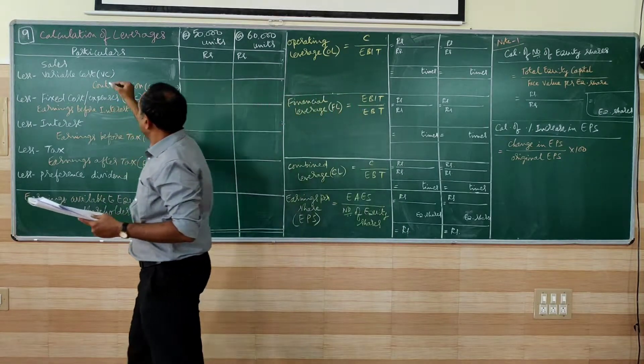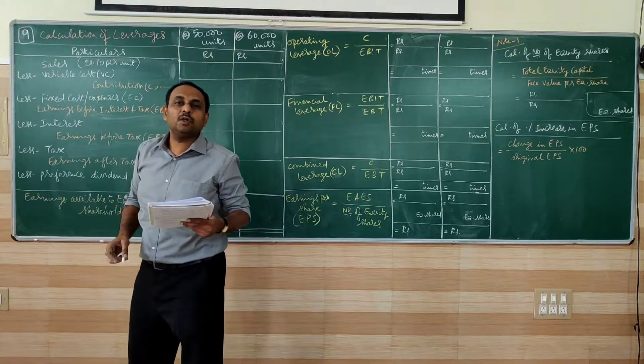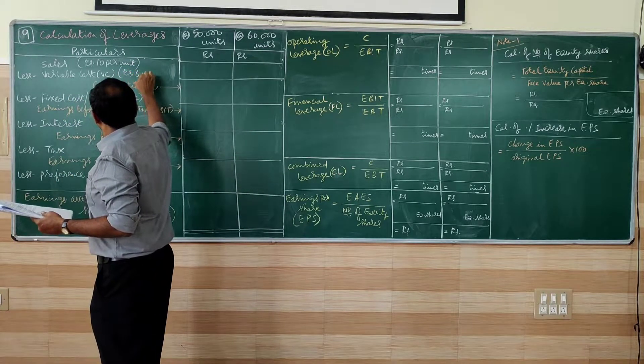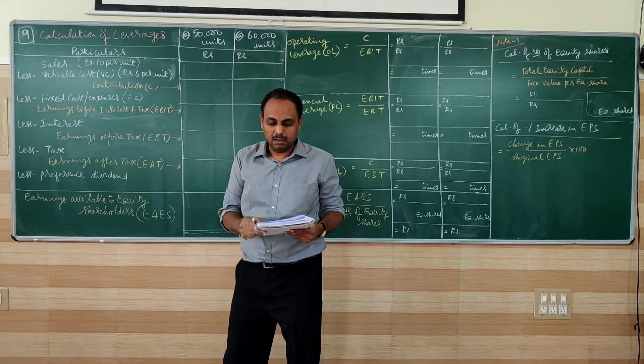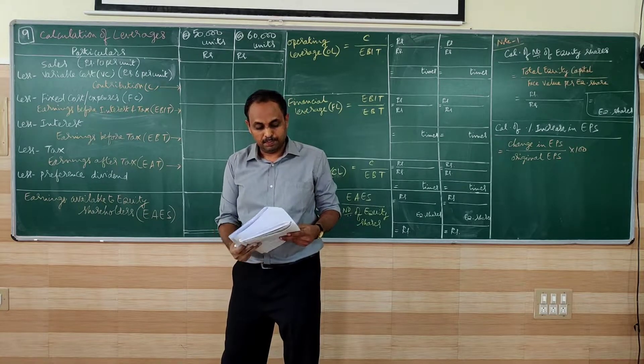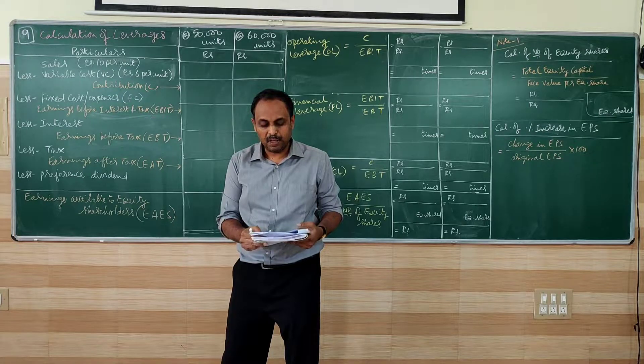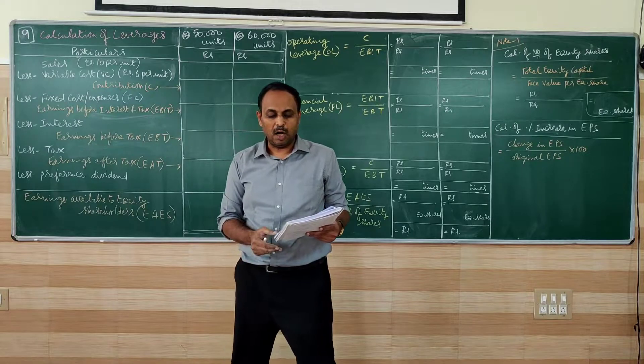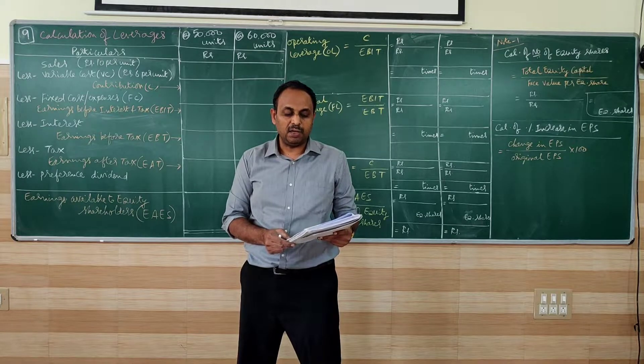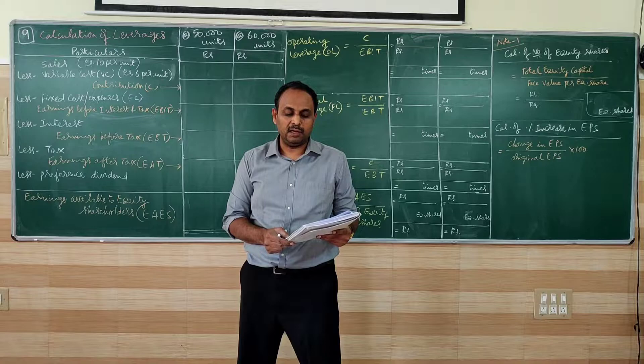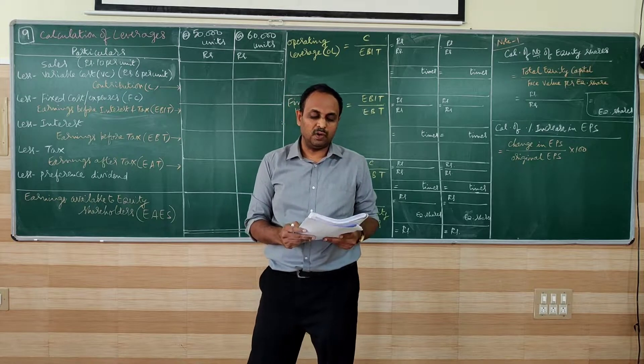Selling price rupees 10 per unit, variable cost rupees 6 per unit, fixed cost is given rupees 1 lakh, and tax rate is given at 10%. Calculate the degree of financial leverage, operating leverage at 50,000 units and 60,000 units, calculate EPS, that is earnings per share, and also calculate percentage increase in EPS. So this is what is given in the problem, we will go on working here.